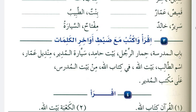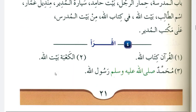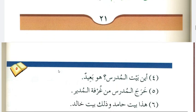So here: بابُ المدرسةِ، حمارُ الرجلِ، بيتُ حامدٍ — in this way you put the endings. We also have حرف الجر here, which will make the مضاف إليه مجرور. Examples: في كتابِ اللهِ، من بيتِ المدرسِ. Read: القرآنُ كتابُ اللهِ — the Quran is the book of Allah. الكعبةُ بيتُ اللهِ — the Kaaba is the house of Allah. محمد صلى الله عليه وسلم رسولُ اللهِ — Muhammad peace be upon him is the messenger of Allah. Put the last vowel on each word and submit it to Google Classroom.